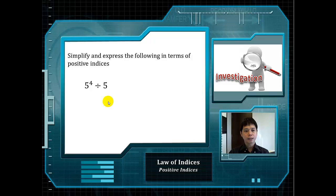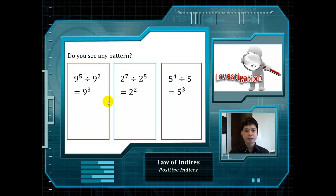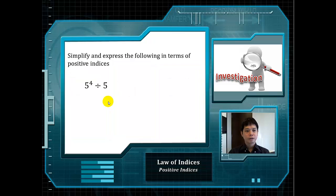Now let's look at one last example: 5 to the power of 4 divided by 5. By rewriting it, we have this. And hence our final answer will be 5 to the power of 3. Do you see any pattern? We can rewrite 5 to the power of 4 divided by 5 as 5 to the power of 4 divided by 5 to the power of 1. We simply subtract the powers and we will get 5 to the power of 3.